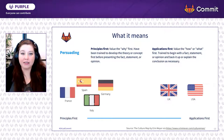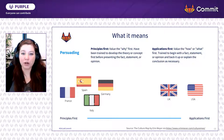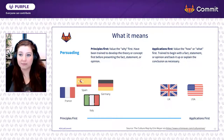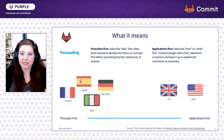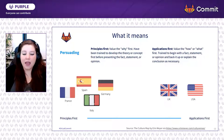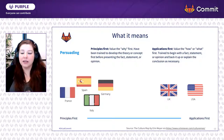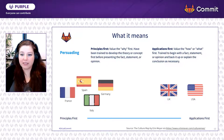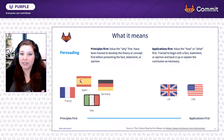Persuading is another indicator. Some cultures are principles-first — they value hearing the why first and are trained to develop the theory or concept before presenting facts, statements, or opinions. On the other hand, applications-first cultures value the how or what first, beginning with a fact or statement and backing it up as necessary — like executive summaries. Erin Meyer mentions that someone from France with a US manager, constantly asked to do something without knowing the why, can be really frustrated by this dynamic.